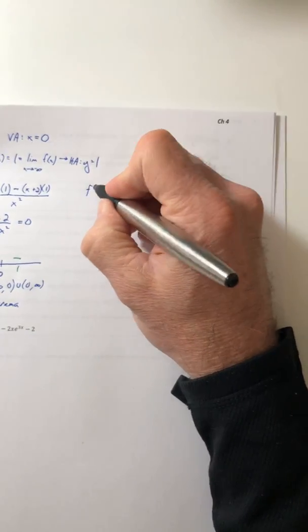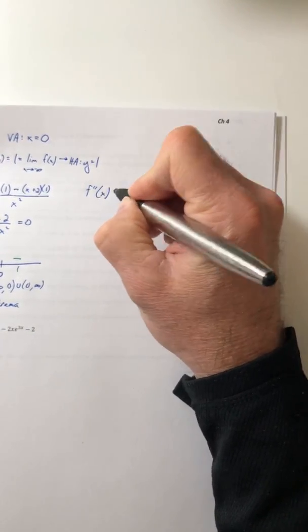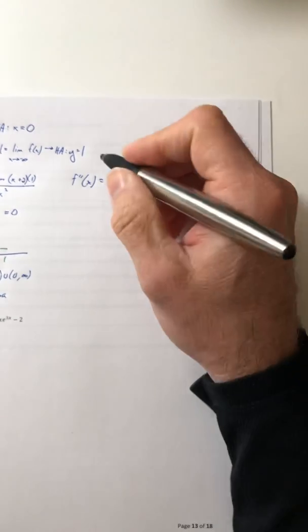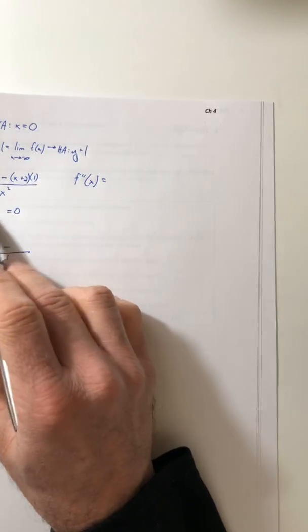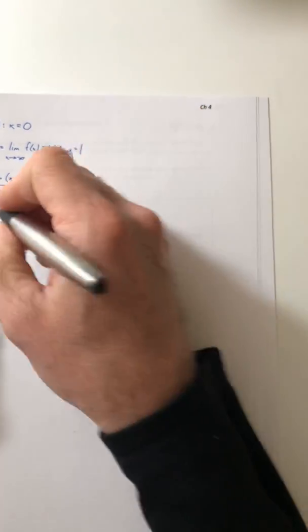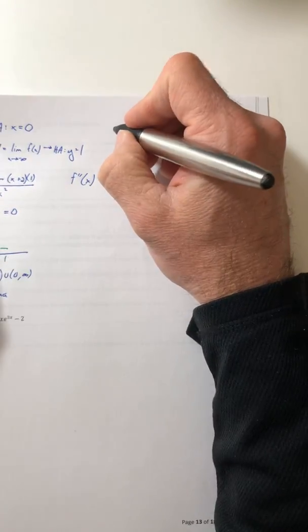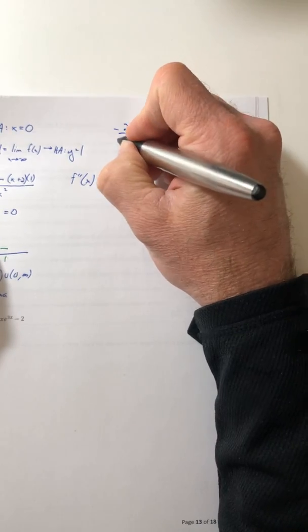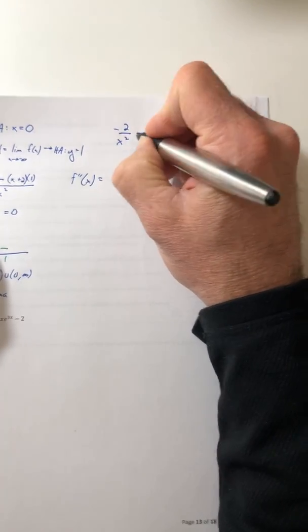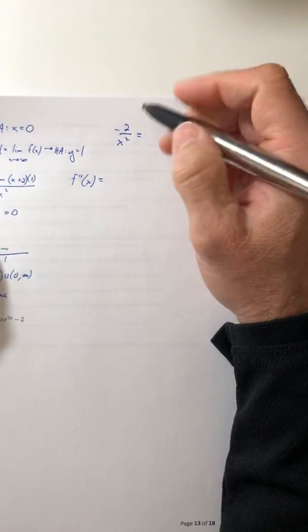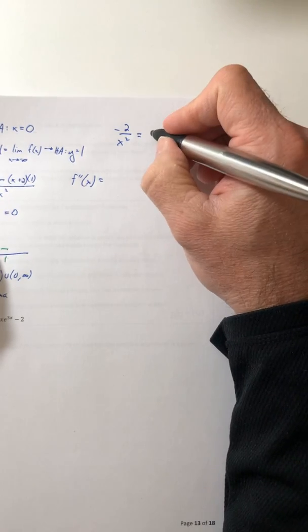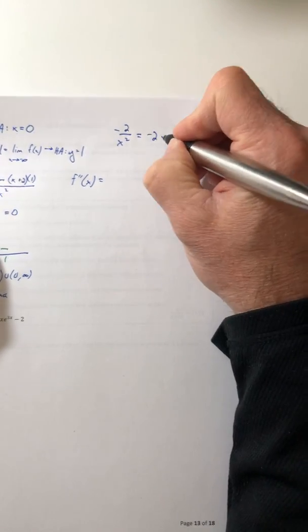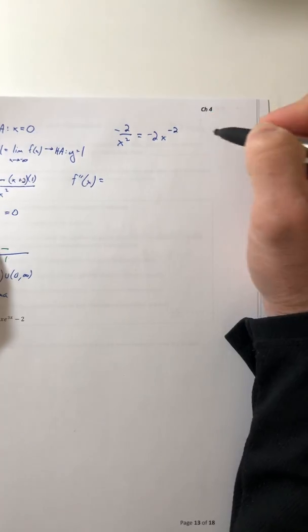All right, so let's get our second derivative and address the concavity. So we can go off of this. So the derivative of this thing, if we rewrote or thought of this in a different form, we could flip the x squared up and write it like this.